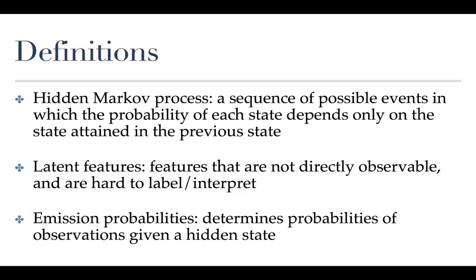This is an important concept not only for Markov models but also crucial for understanding collaborative filtering and recommendation systems, as well as neural networks, where you have hidden layers which are kind of like your latent features and how they interact with each other.